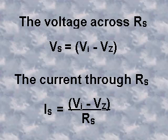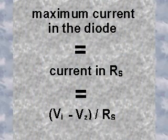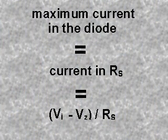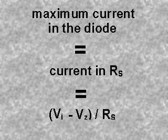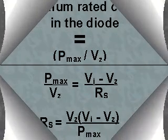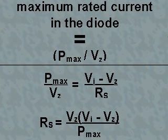In the worst case, the load resistor may not be present, and all of the current will go through the Zener diode. Thus, maximum current in the diode is equal to V sub I minus V sub Z divided by R sub S. If the power dissipation is to be less than the specified P max, then the maximum rated current in the diode is equal to P max divided by V sub Z.